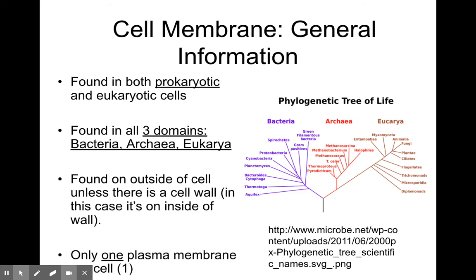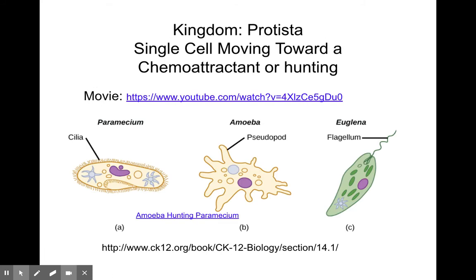There's only one plasma membrane per cell. This is a eukaryotic kingdom called Protista. Maybe you got to see some scum from the fish tank and saw little things swimming around — those were protozoa, which is a type of protist. If you want to see these animal-like organisms hunting each other, you can see how the amoeba would hunt a paramecium. It's kind of cool and creepy to watch.